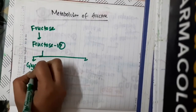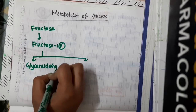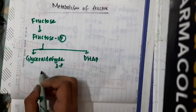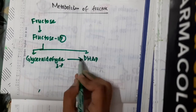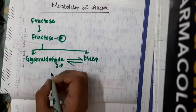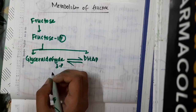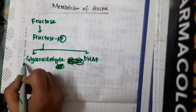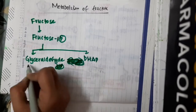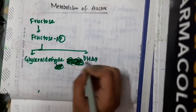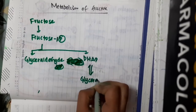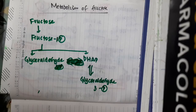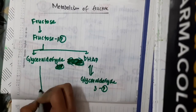Fructose-1-phosphate in the presence of aldolase B forms glyceraldehyde and dihydroxyacetone phosphate (DHAP). This dihydroxyacetone phosphate is interconvertible with glyceraldehyde-3-phosphate by triose phosphate isomerase.